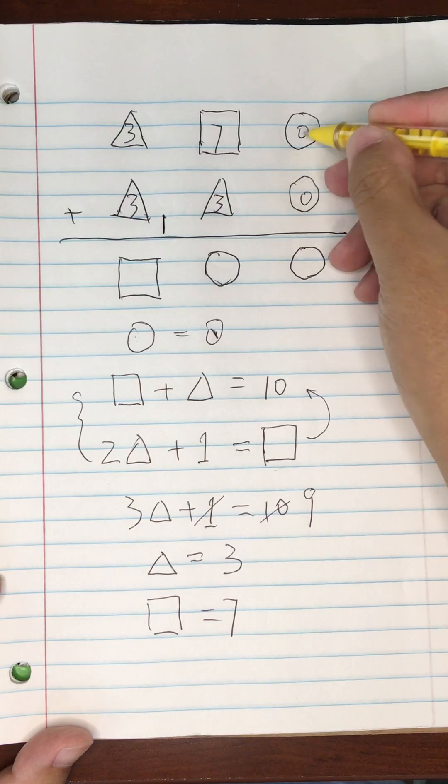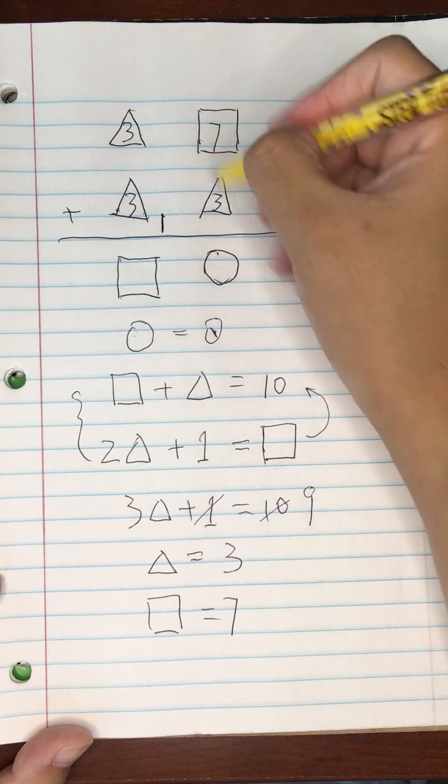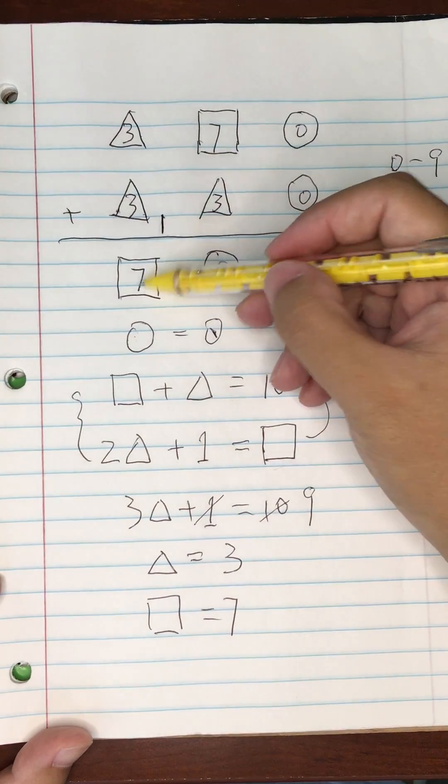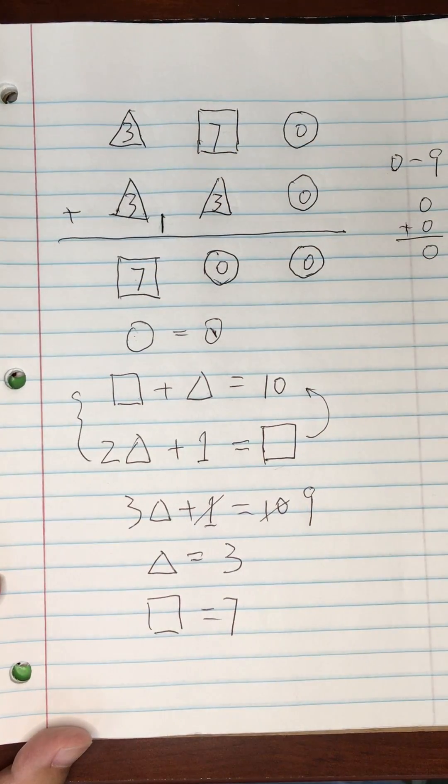Zero plus zero, that's zero. Seven plus three, that's ten, carry one. And then seven, the square is seven. So our result is correct.